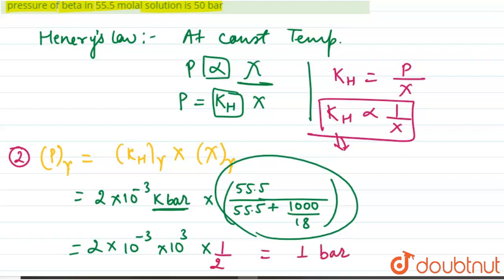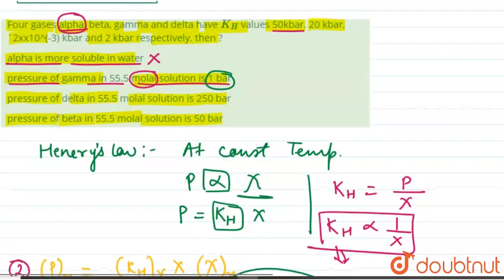So when we look at option number 2, pressure of gamma in 55.5 molal solution is 1 bar. So the second option is the correct option.